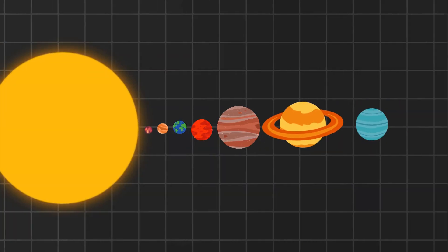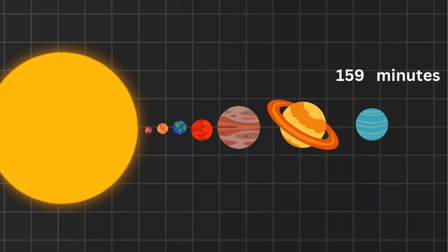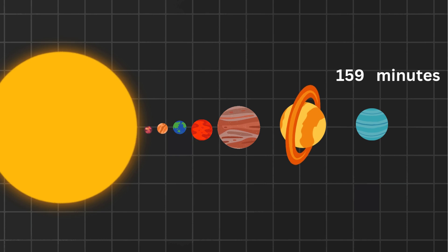Next is Uranus. Now we're really talking distance. Sunlight takes 159 minutes, or almost 2.5 hours to get there. That's longer than a soccer match.